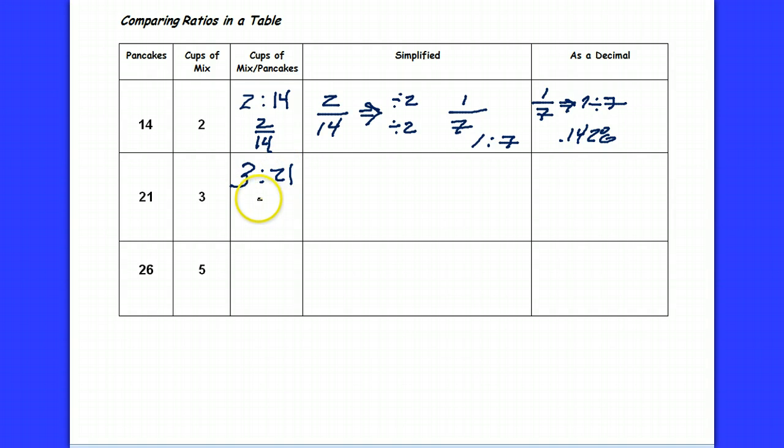As a fraction that's 3 over 21. When I simplify 3 over 21 by dividing the top and bottom by the greatest common factor, which is 3, I once again get 1 seventh.